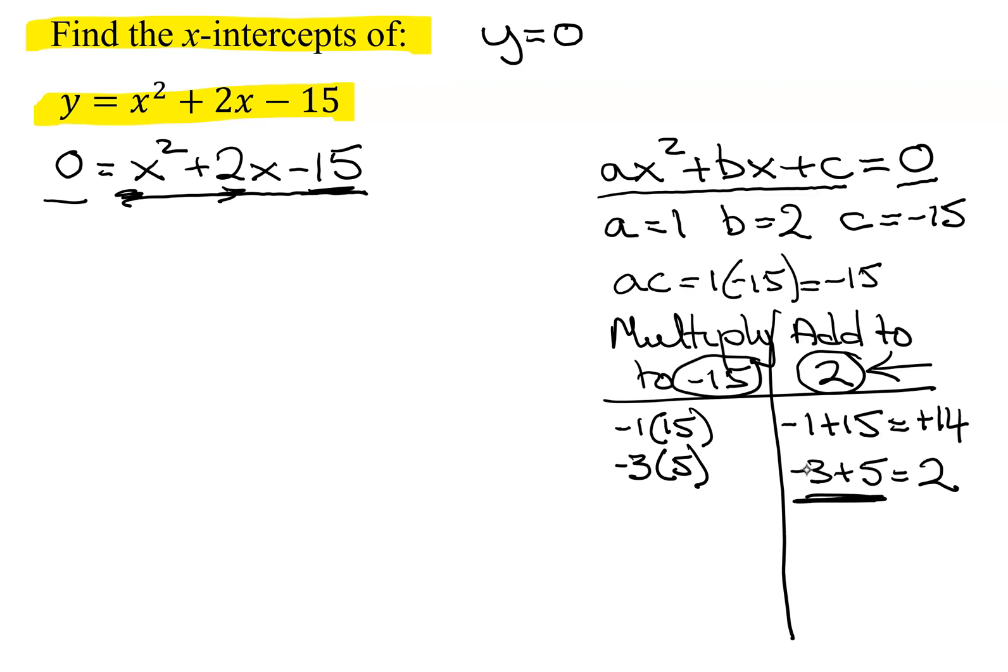Here are my two factors. Remember, this is the easy factoring, since a was equal to 1. When a was equal to 1, these are my two factors. So I'm just going to get x minus 3 times x plus 5.